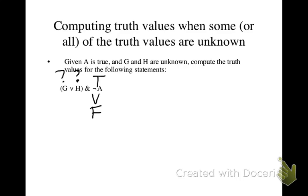When not A is false, then this conjunction as a whole is false. We don't need to know the truth value for G or H in order to calculate the truth value of this formula. As long as we know A is true, then we can know this formula is false.